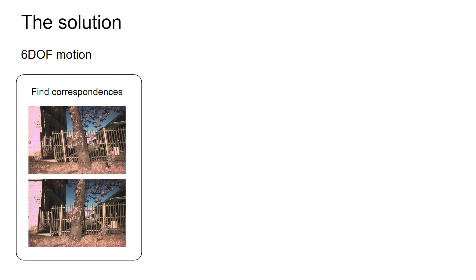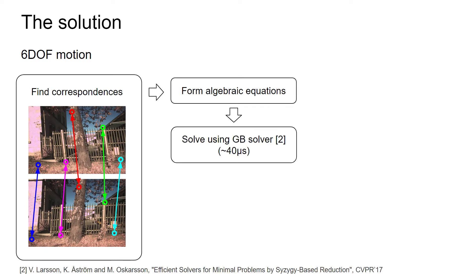First, we take a look at the most general case, where the motion contains both rotation and translation. We start by finding correspondences between the images. In this case, we need five. Next, we form a system of algebraic equations, then we solve those equations using our Gröbner Basis-based solver. Note that this solver is very fast and therefore suitable for both robust and real-time estimation. As a result, we obtain the angular and translational velocities.